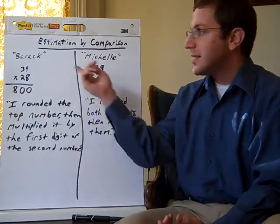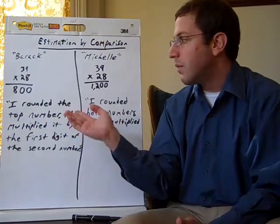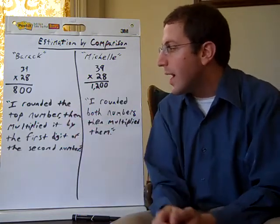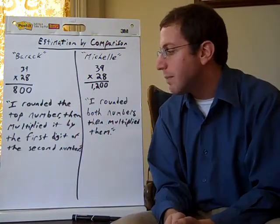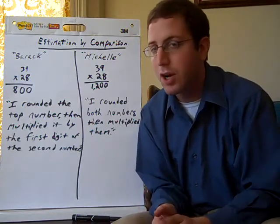You have them essentially give a little bit of an explanation of what they've done. So in this estimation problem, 39 times 28, what Barack did was he says here, I rounded the top number, then multiplied it by the first digit of the second number, and he comes up with 800.